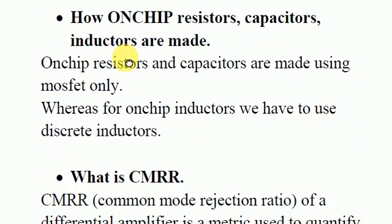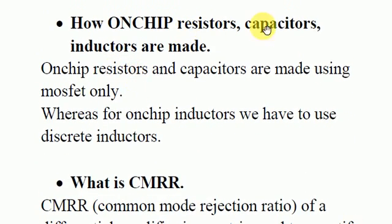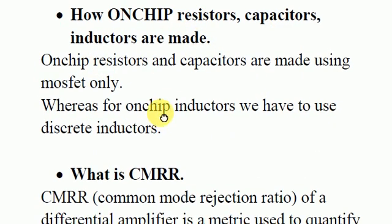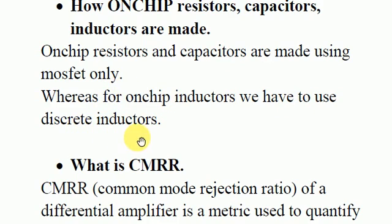They also asked how on-chip resistors, capacitors, and inductors are made. On-chip resistors and capacitors are made using MOSFETs only, whereas on-chip inductors cannot be made — you have to use a discrete inductor.